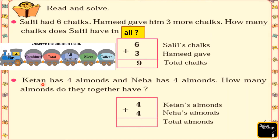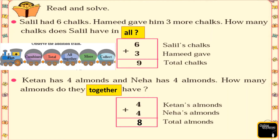Now question number 2. Ketan has 4 elements and Neha has 4 elements. How many elements do they have together? The magical word here is 'together,' which means we have to add or use plus. Ketan has 4 elements and Neha has 4 elements, so altogether 4 plus 4 is equal to 8.